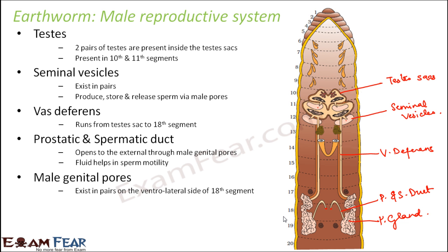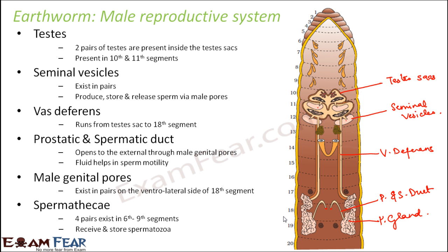Next are the spermathecae — four pairs exist in the sixth to ninth segments. Their function is to receive and store spermatozoa from another earthworm. So they will receive sperms from some other earthworm and store them.